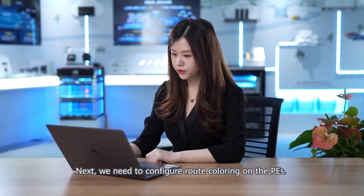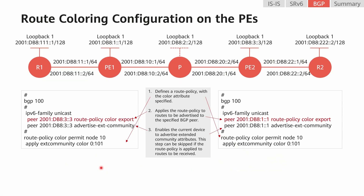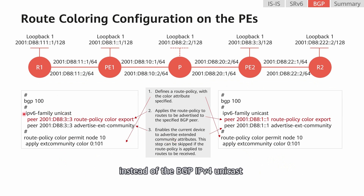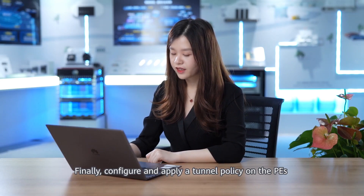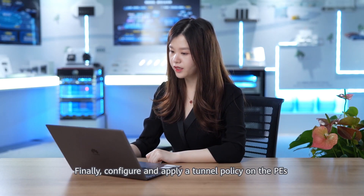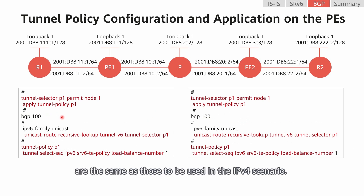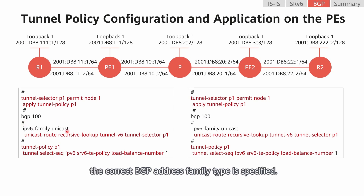Next, we need to configure route coloring on the PEs. The key configurations in this scenario are almost the same as those in the IPv4 scenario, except that the BGP IPv6 unicast address family instead of the BGP IPv4 unicast address family is used in the IPv6 scenario. Finally, configure and apply a tunnel policy on the PEs to import public network IPv6 traffic. The key configuration commands are the same as those used in the IPv4 scenario. You only need to ensure that the correct BGP address family type is specified.